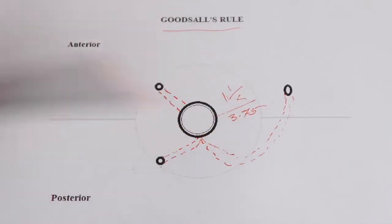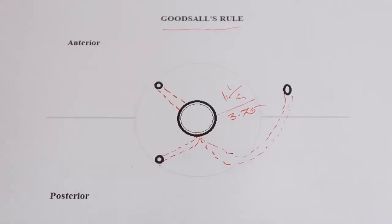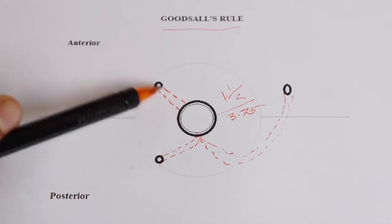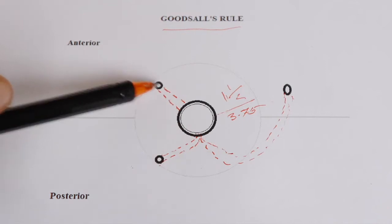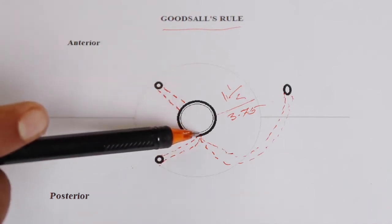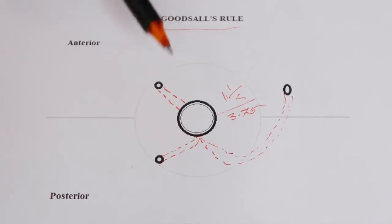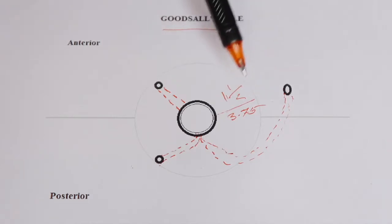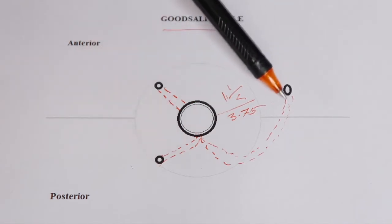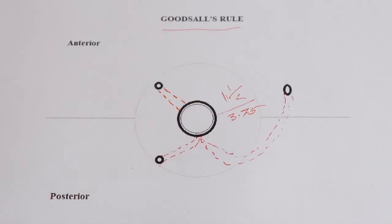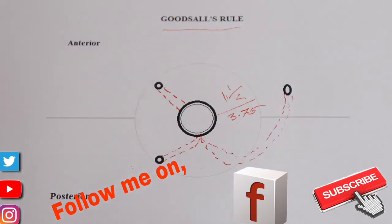This is all about Goodsall's rule. The rule explains the course of the fistula track. When the external opening is anterior, the track is linear. When it is posterior, it curves and opens in the posterior midline. The exception is when the opening is more than one and a half inches from the anal verge — then the track behaves as if it is on the posterior side and curves to open in the posterior midline. If you like this video, kindly subscribe, press the bell icon, press the like button, and share with those who need it. Thank you.